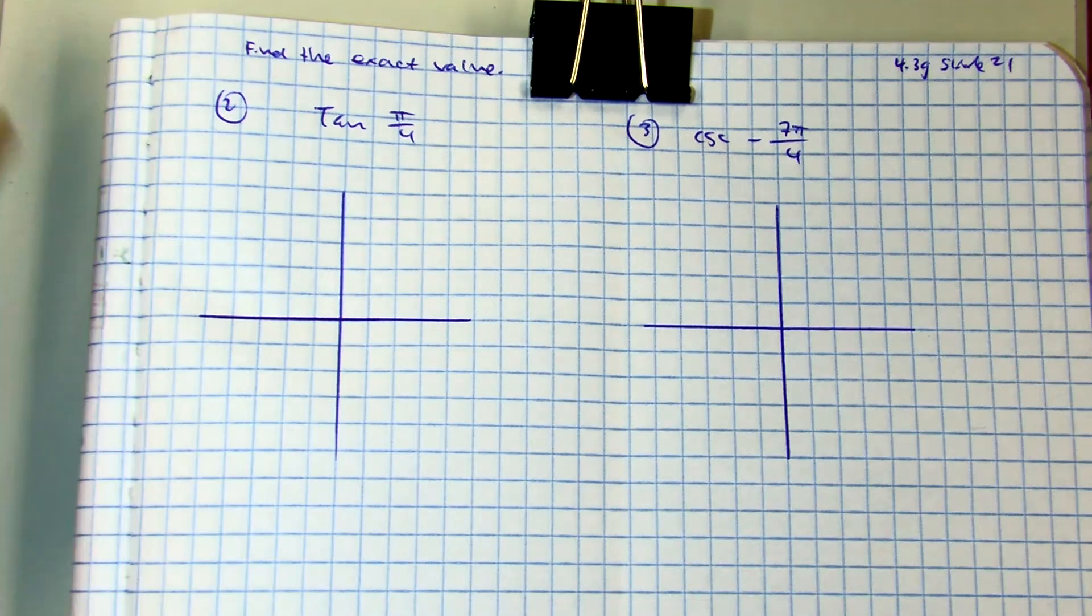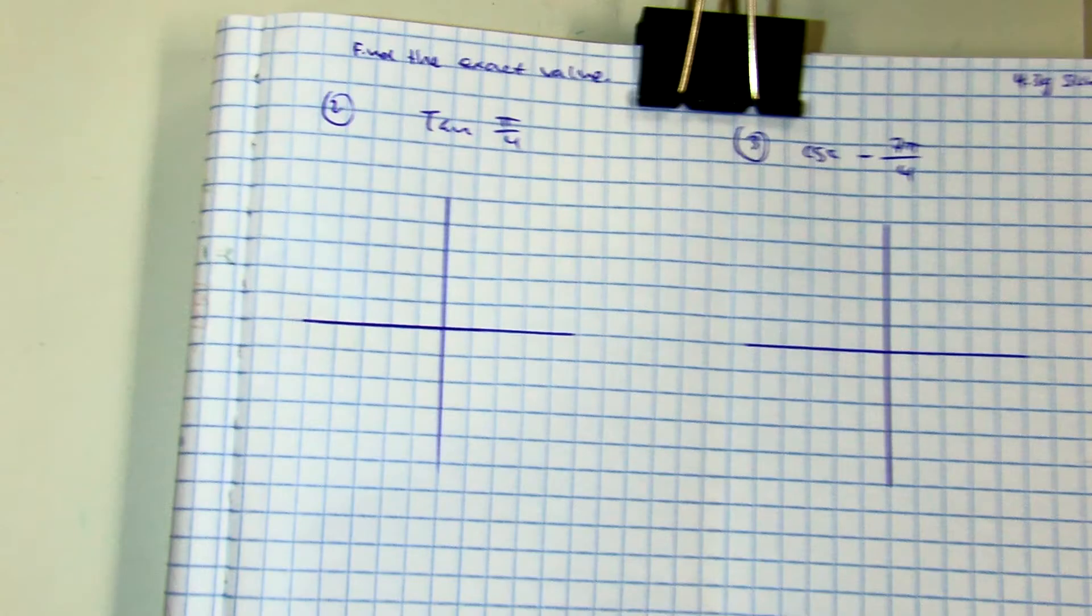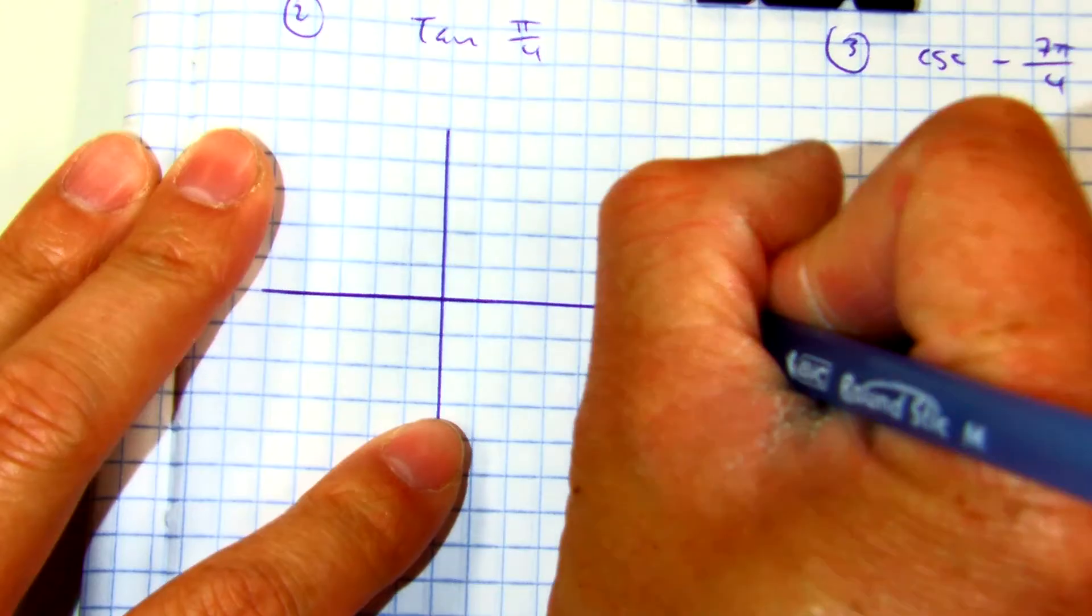Alright, I'm going to find the exact value of tangent at pi over 4. I'm going to go around and label the quadrants in radians. 0 pi.